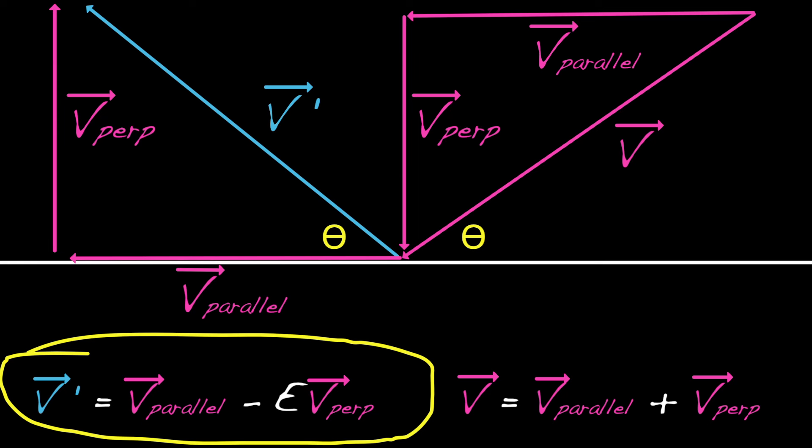Cool! We can use the idea of writing the velocity as the sum of parallel and perpendicular components to study the case when two particles i and j of the same mass collide.